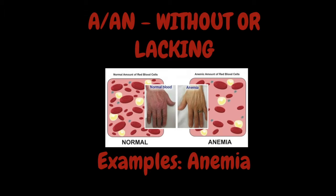So an A or AN prefix is going to mean lacking or without. An example of this is going to be anemia. Anemia means the capacity or ability of blood to carry oxygen, but the A prefix in front of it is going to signify that there is a lacking ability of blood to carry oxygen.